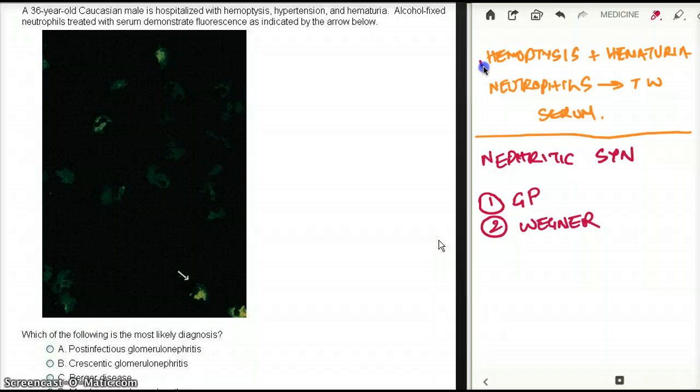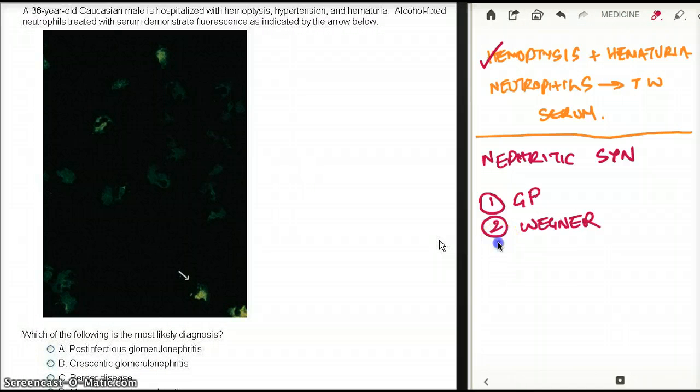The second point says neutrophils treated with serum show this kind of immunofluorescence. What can we find inside neutrophils that is going to glow when treated with serum? In Wegener's, there is something called C-ANCA. C-ANCA - C stands for cytoplasmic, A stands for autoimmune neutrophil cytoplasmic antibodies.